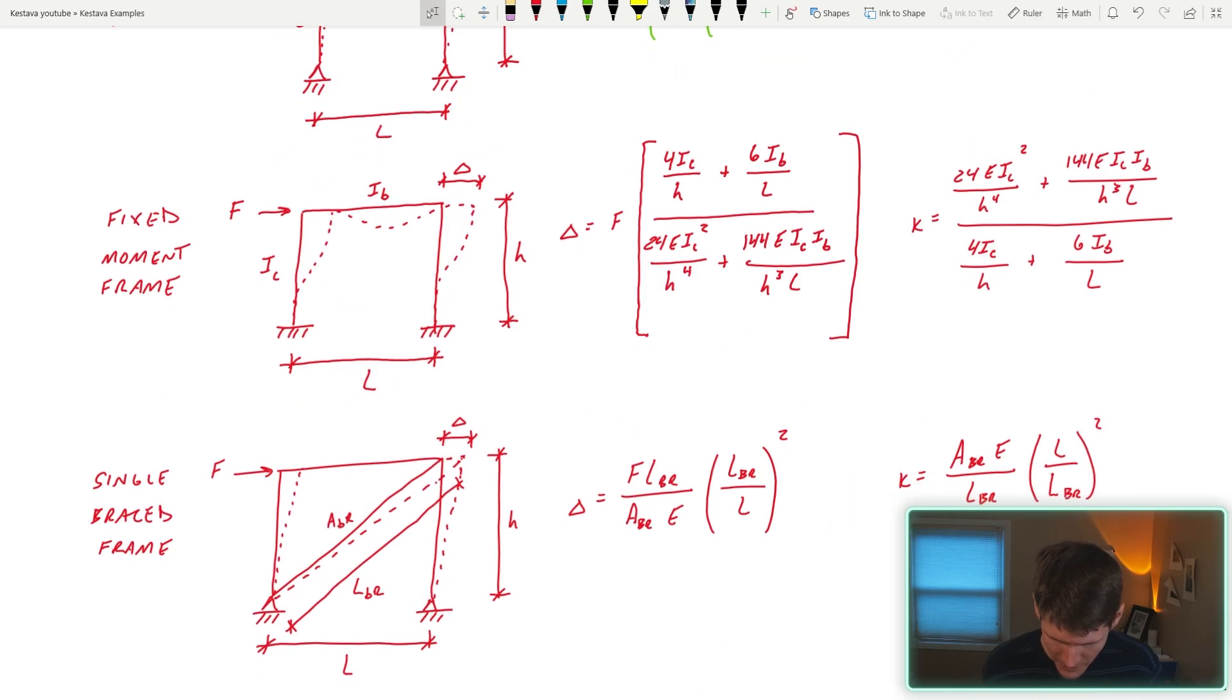Moving down, we have our fixed moment frame. Similar, except there's this honking equation. So we are fixed at the base and we are fixed at the connections of the beams to the columns. Same variables throughout, just jumbled up and expanded upon in all reality. So pause the video here if you'd like, because it's a lot to take in, but always check me on this. Because again, I am not 100% sure on how this was derived. And then after you do figure this out, it's just the inverse gets you your stiffness of your fixed-fixed moment frame system.